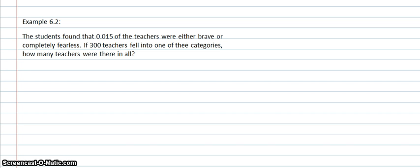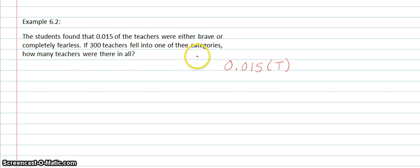The second example in lesson 6 is a word problem where we're using decimals to find out the total number of teachers. The students found that 0.015 of the teachers were either brave or completely fearless. If 300 teachers fell into one of these categories, how many teachers were there in all? So 0.015 times the total number of teachers equals 300.